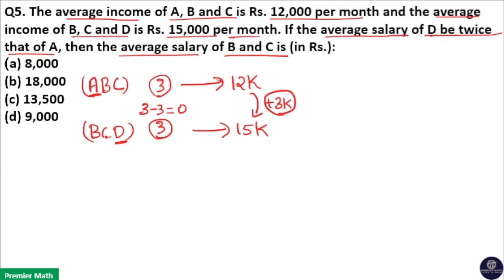Here B and C is common. So when D replaces A there is an increment of 3,000 rupees in the average income. The question clearly says that the salary of D is twice that of A, meaning D has more salary than A. So when D replaces A there is an increment of 3,000 rupees. Therefore D is equal to 2A as per the question.